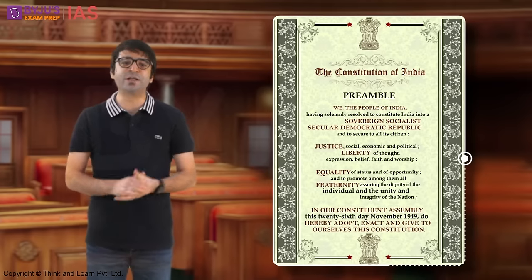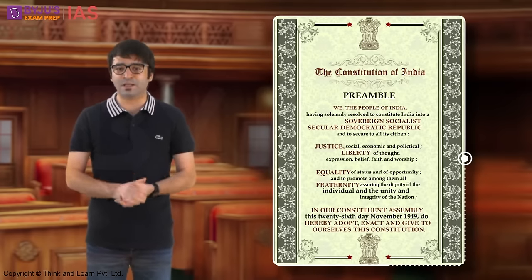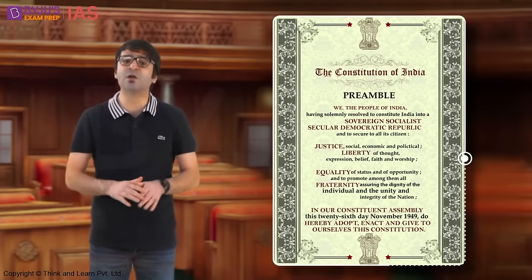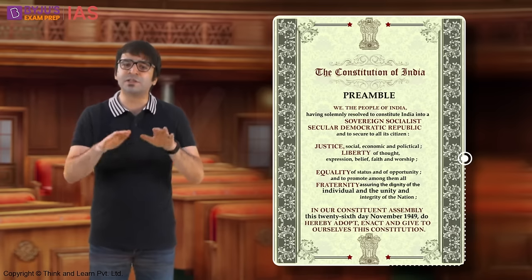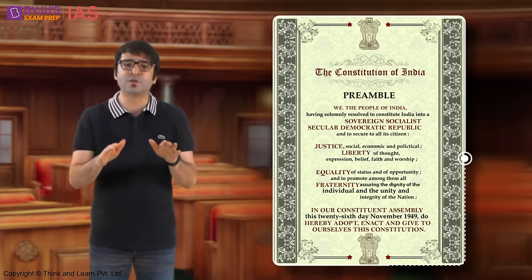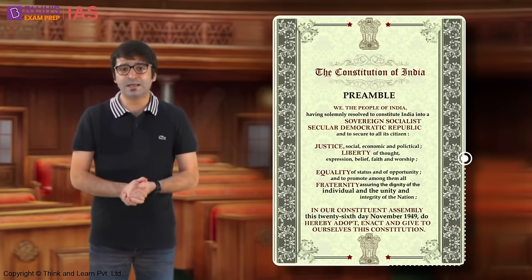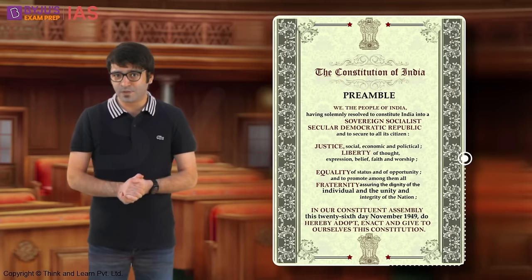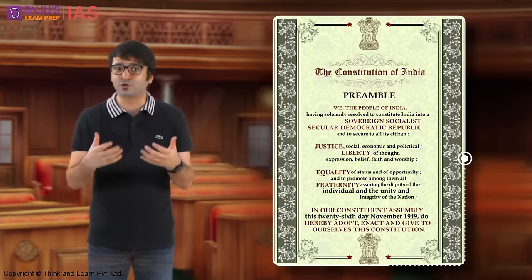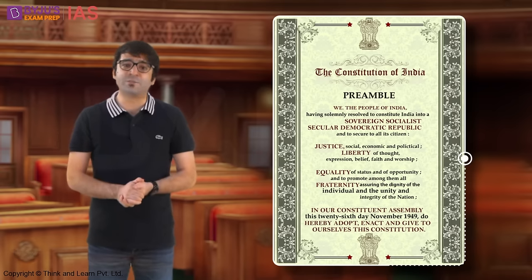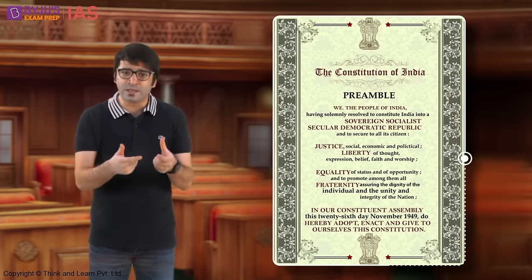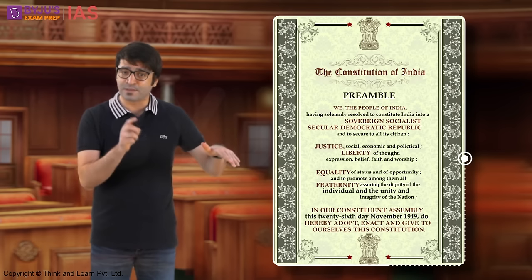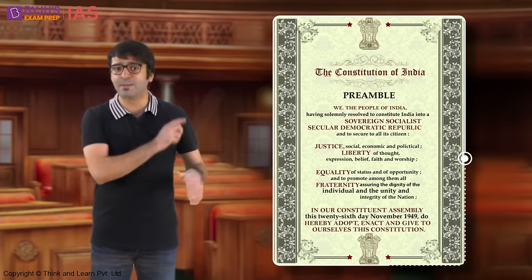The constitution of India begins with the preamble, yet it was taken up for discussion only after the debates for the constitution ended. This is because the makers of the constitution wanted to ensure that the preamble was in conformity with the constitution as adopted by the constituent assembly.